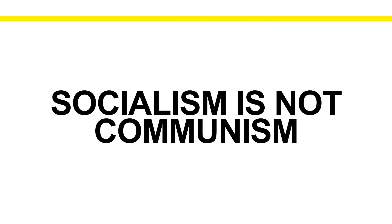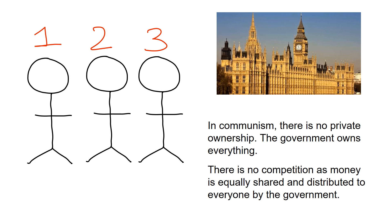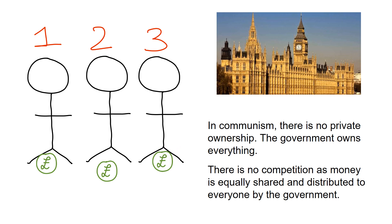This is a common mistake made by students: socialism is not communism. Going back to the Monopoly example — in socialism, you are still playing Monopoly. You still have rich people and poor people. The difference is that in capitalism the rich got richer and the poor tended to get poorer, whereas in socialism the rich had to give more money in taxes to the government to distribute. In communism, there is none of that. The government owns everything and everyone gets paid the same amount regardless of the job they have — whether you are a brain surgeon, a lorry driver, or a window cleaner — and there is no competition because everything is equally shared and distributed by the government.